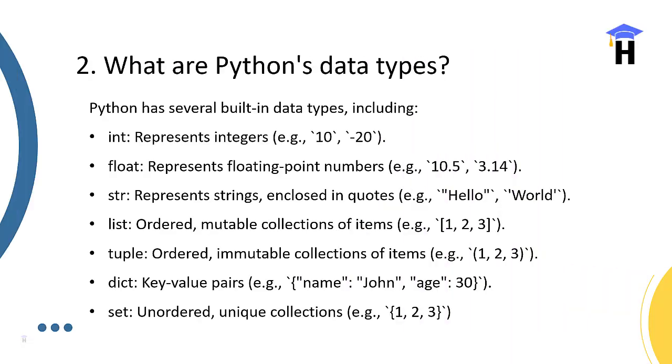What are Python's data types? Python has several built-in data types including int which represents integers, float represents floating-point numbers, str represents strings enclosed in quotes, list, tuple, dict which means dictionary, and set.